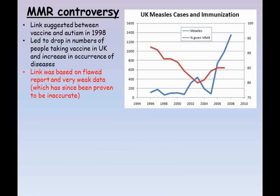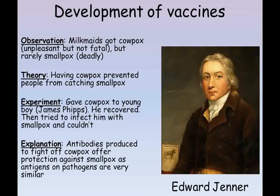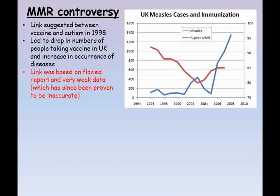Understanding the risks and advantages of immunisation is very important. This has been highlighted in recent years by the MMR controversy, where a flawed report made some people doubt the safety of the vaccine that provided protection against measles, mumps and rubella — three very dangerous childhood diseases. As this graph shows, following the report published in 1998, fewer children received the MMR vaccine as people worried about the risks involved. However, within a few years, cases of measles, which had almost disappeared in the UK due to vaccination, began to increase rapidly as fewer children were protected against it.